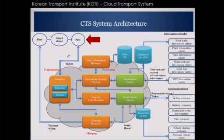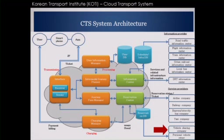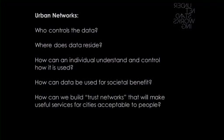If you look at this, you'll notice there is a box for applications connected to your smartphone — a journey planner, an information center, a reservation center — but also these three little boxes for the database. So where does this data go? The questions we're asking — and I don't think there are any good answers yet: Who controls the data? Where does the data reside? How can an individual understand and control its use? How can this data be used for societal benefit? And most importantly, how can we build trust networks that will make all kinds of useful services for cities acceptable to people? We know how to design the vehicles and imagine the interfaces and components, but I think these are the big questions we have to work on. Thank you.